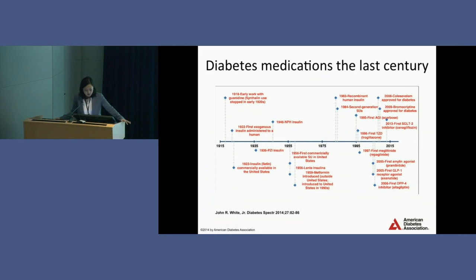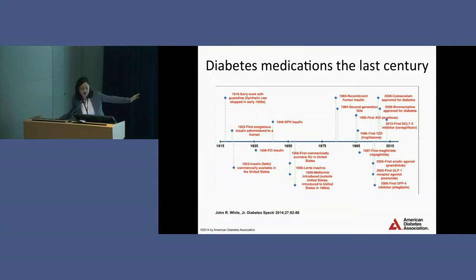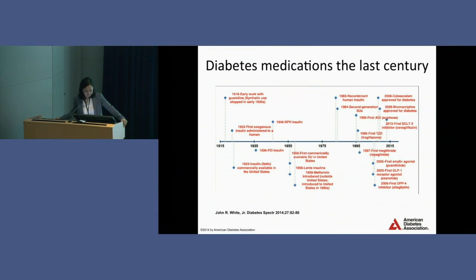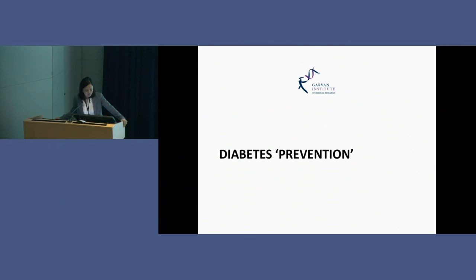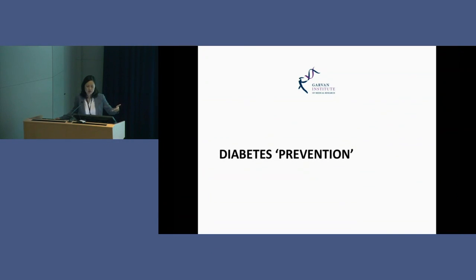From 1915, when we first worked out there was insulin, all the way to now, there's been a real increase in the number of medications we can use, particularly lately. What about diabetes prevention? How can we prevent this strongly genetic condition? I'm talking about prevention of type 2 — prevention of type 1 is still an area of much research.